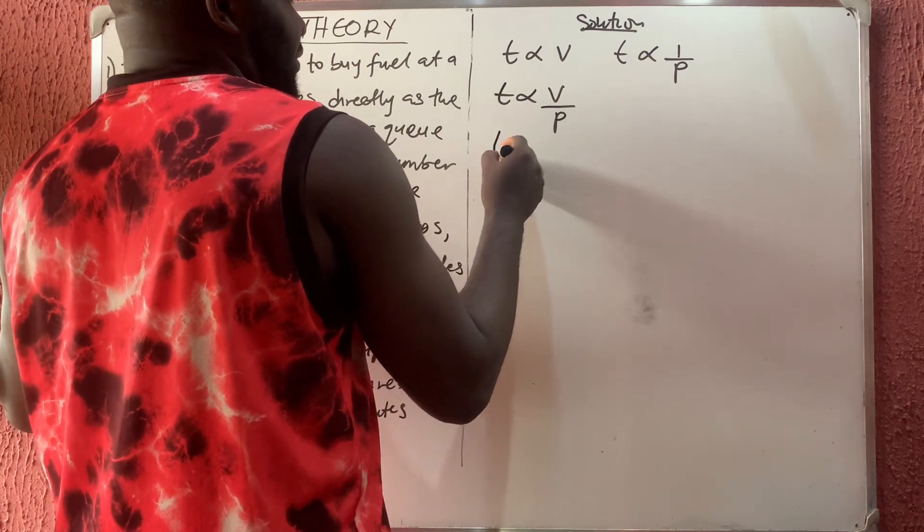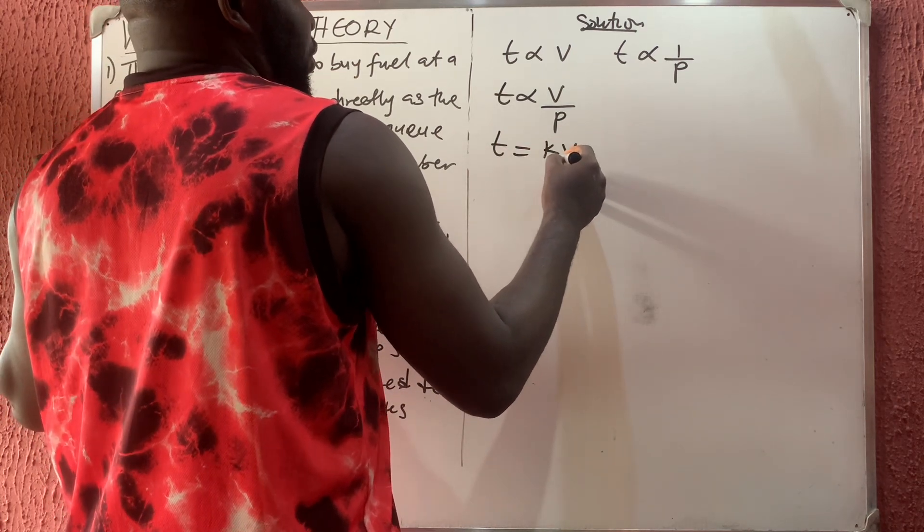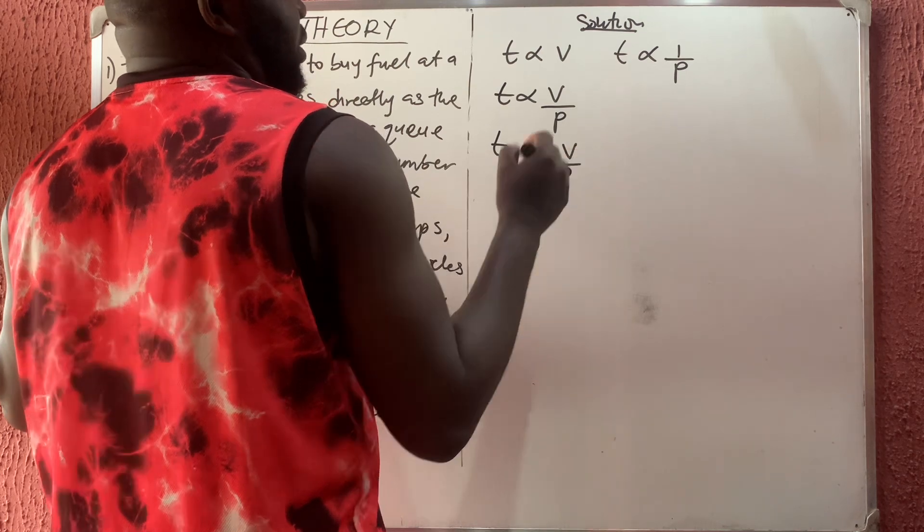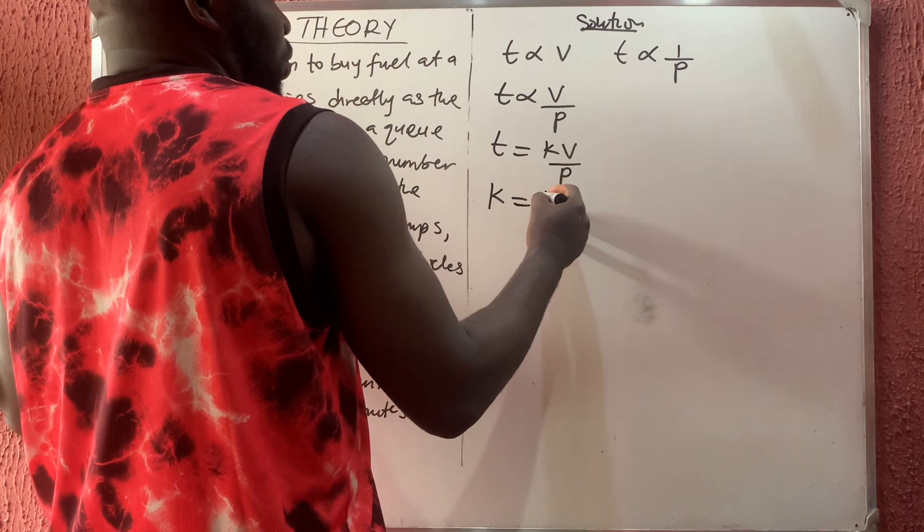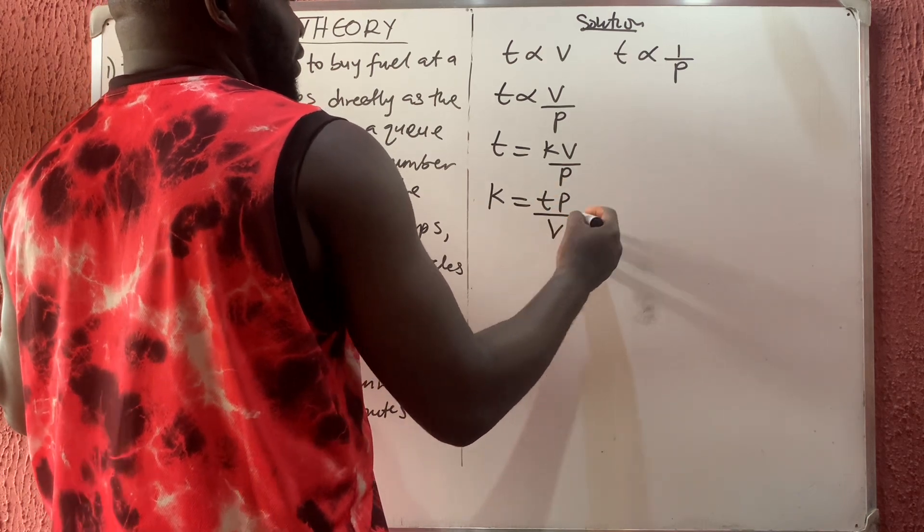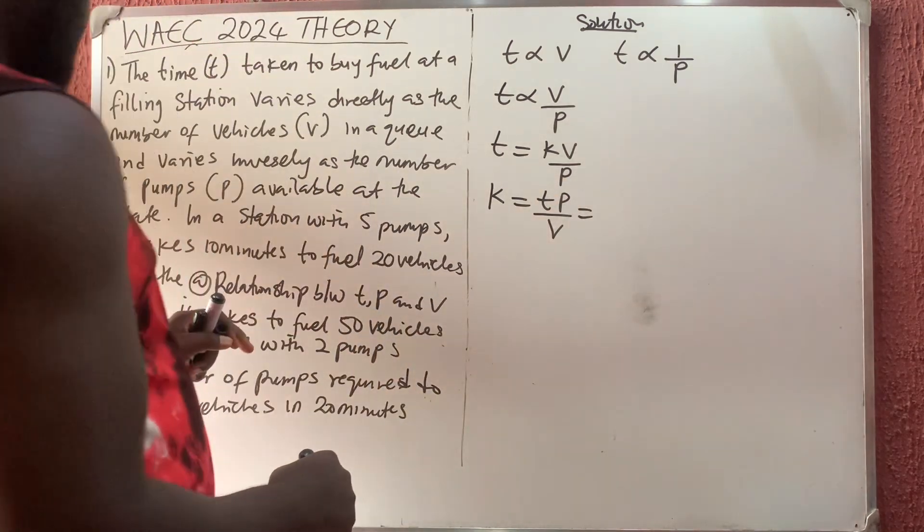If you remove the proportionality sign, you're going to have that t equals k v over p. If I make k the subject of formula, I'll have that k equals t p over v. From the first statement they say that in a station with five pumps...